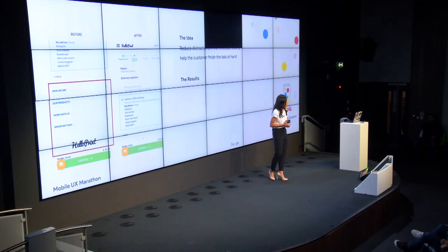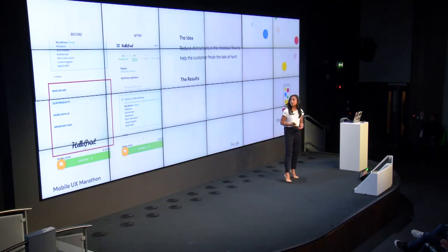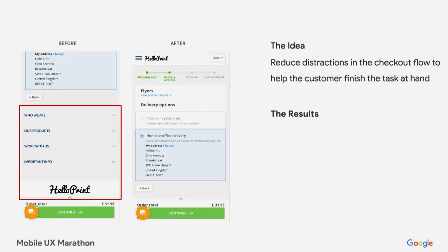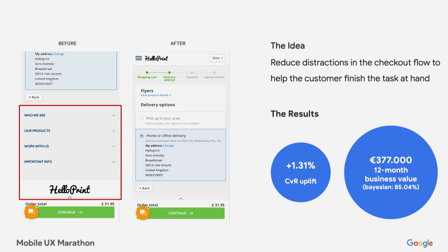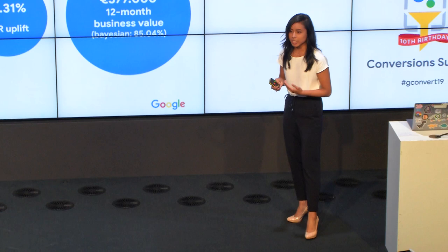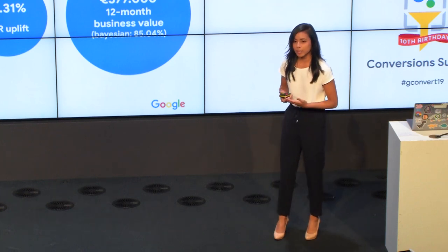A real example is the online print platform HelloPrint. Rather than reducing unnecessary words, they went as far as removing entire elements that were not necessary — all the way in the checkout flow, they reduced footer distractions to help users get to checkout much quicker. They saw a 1.3% conversion rate uplift, which in a year's time earned them 377,000 euros.